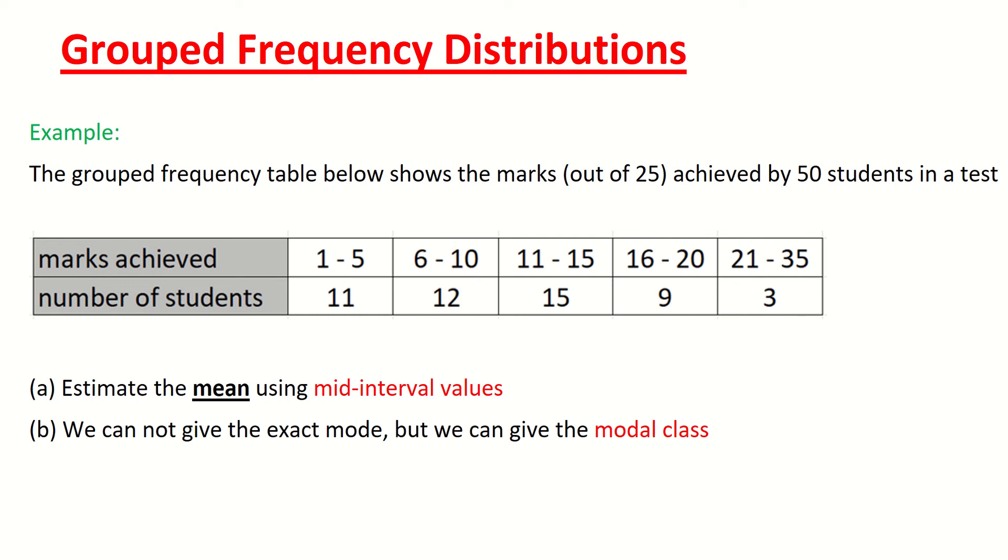So the question is asking us in part A to estimate the mean using what's known as mid-interval values. So we're going to use mid-interval values to calculate an estimate for the mean. Now it's not going to be the exact mean because we don't know all of the scores. We just have them broken into these categories. And then when we calculate the mean in part B, we're going to find what's known as the modal class. We should remember that modal is the same as the mode meaning the most common mark.